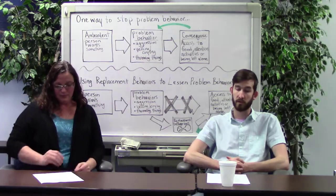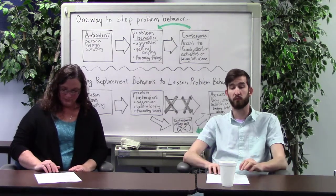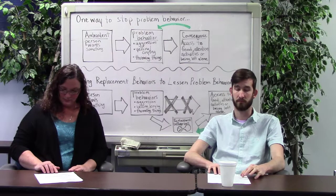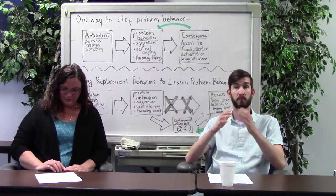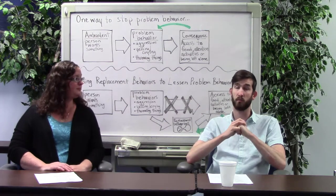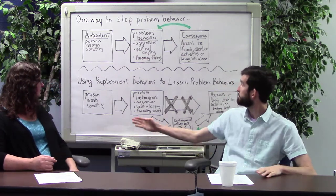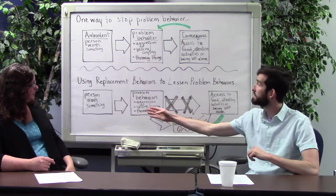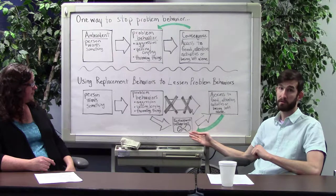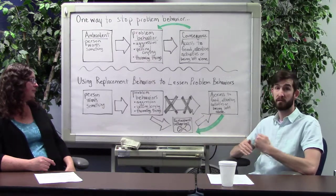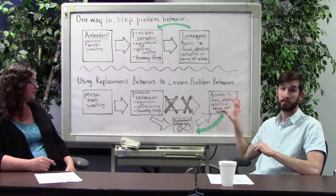So we want to make sure that we are reinforcing appropriate behavior. This is our antecedent behavior consequence model, but this time we add in replacement behaviors, so we want the consumers to do this instead of the problem behavior to access what they want or need, which is really important.